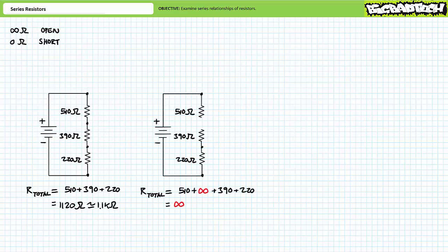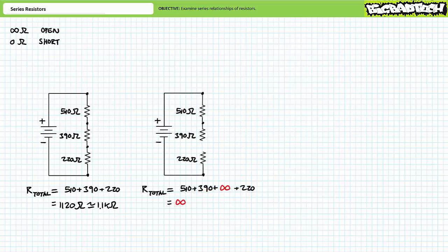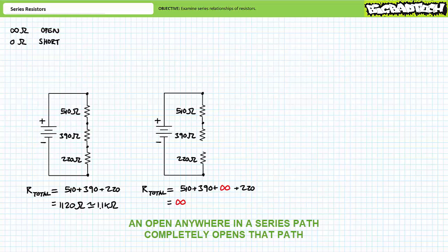If, however, there existed a gaping hole between the first two resistors, the total resistance of this series path is now infinite — an open circuit through which no current can flow. Due to the inclusion of the open, the source effectively sees an infinite resistance because no conductive path exists. Likewise, a gaping hole between the last two resistors produces the same result: an open circuit with infinite resistance.